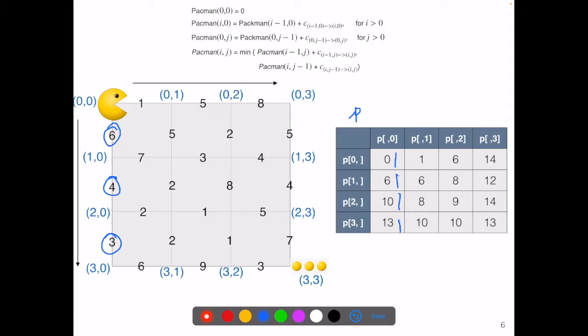Similar idea, p(0,1) will be p(0,0) plus the cost of 1. So that's 1. And p(0,2) will be 1 plus 5. That's 6. And p(0,3) will be 6 plus the cost of 8. So that's 14.